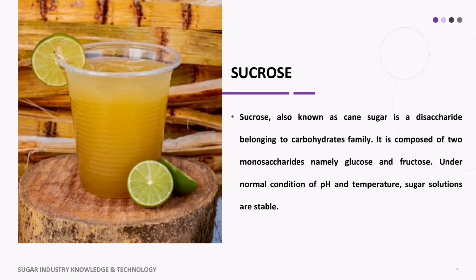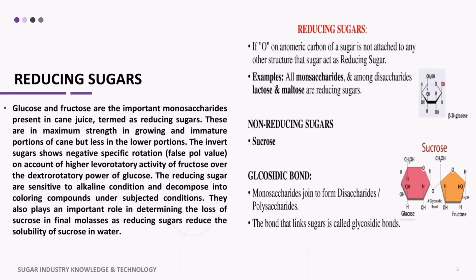Today the discussion is on the main components of sugarcane and their function in manufacturing units. Sucrose, also known as cane sugar, is a disaccharide belonging to the carbohydrates family. It is composed of two monosaccharides, namely glucose and fructose. Under normal conditions of pH and temperature, sugar solutions are stable.